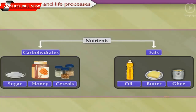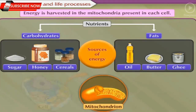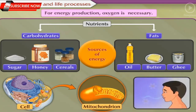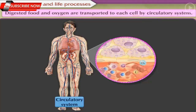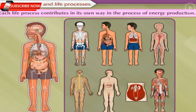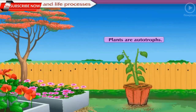For proper functioning, these systems need a continuous supply of energy. Nutrients like carbohydrates and fats are the main sources of energy. Energy is harvested in the mitochondria present in each cell. For energy production, along with nutrients, oxygen is also necessary — though exceptionally, some microorganisms do not need oxygen for energy production. The digested food and oxygen are transported to each cell by the circulatory system, so each life process contributes in its own way to energy production.